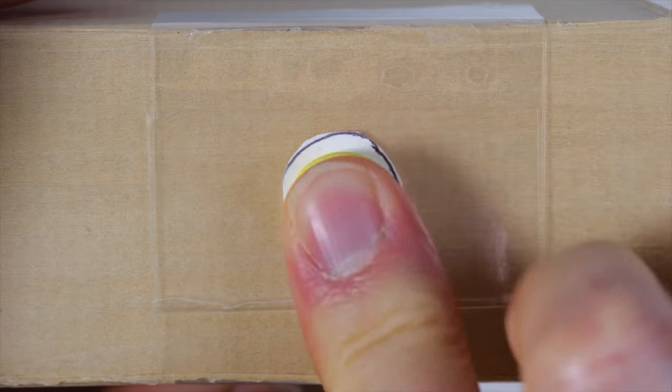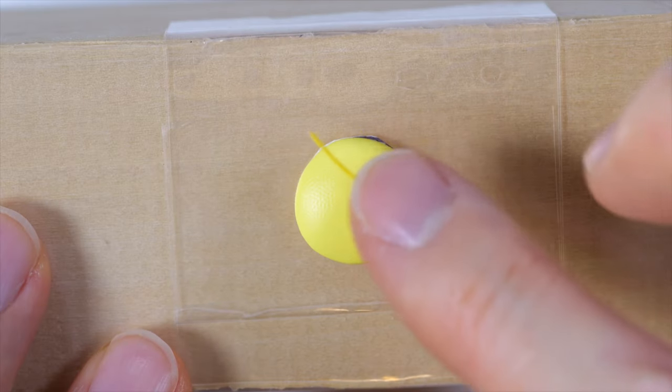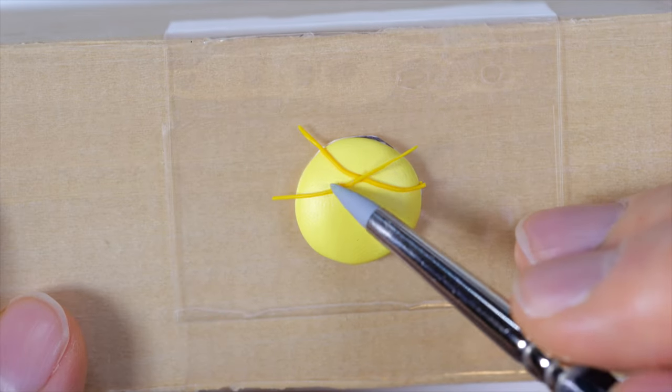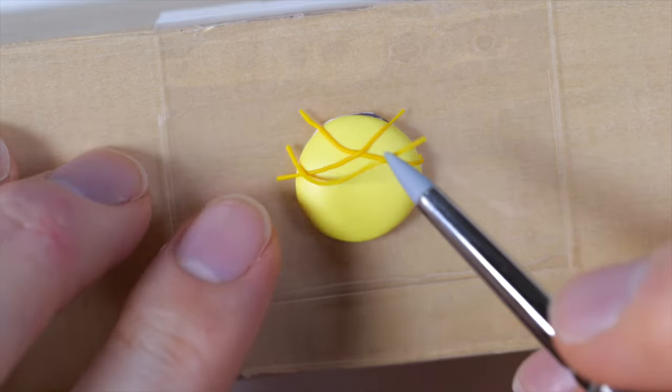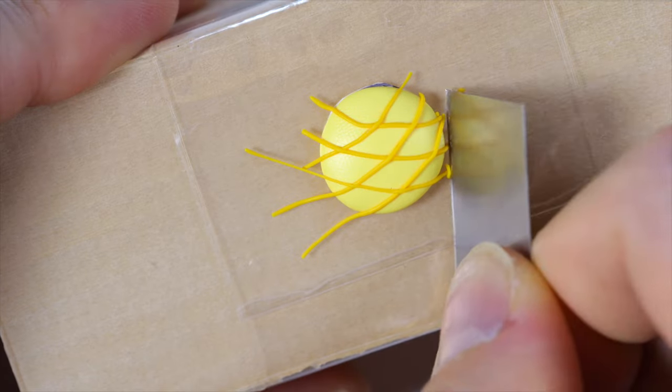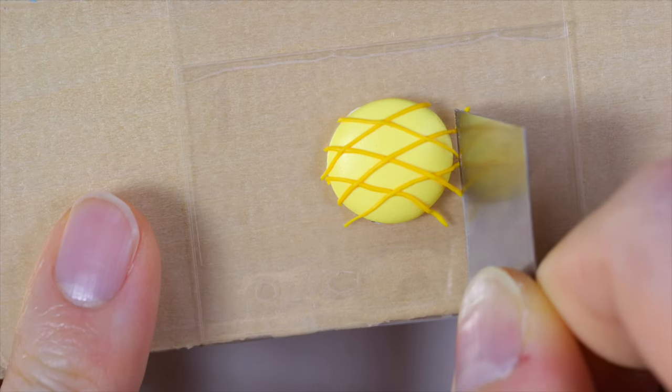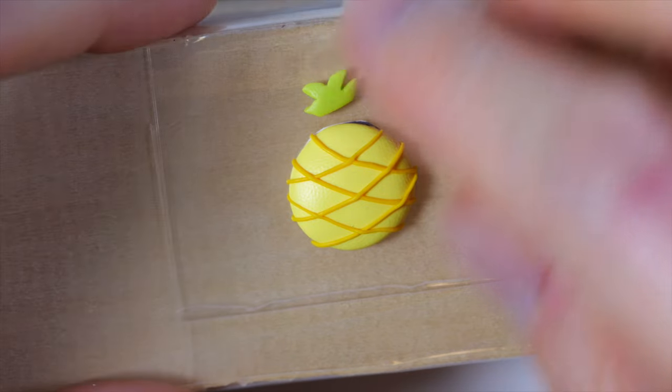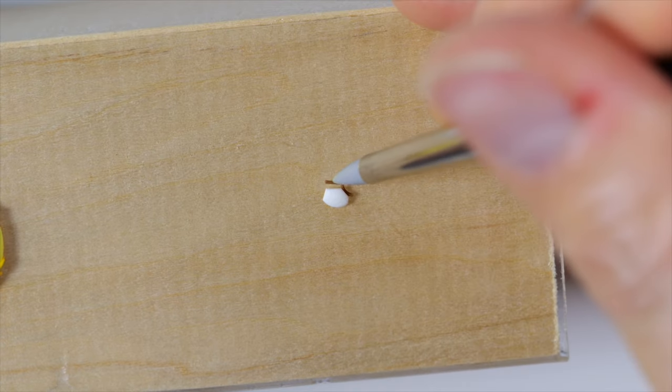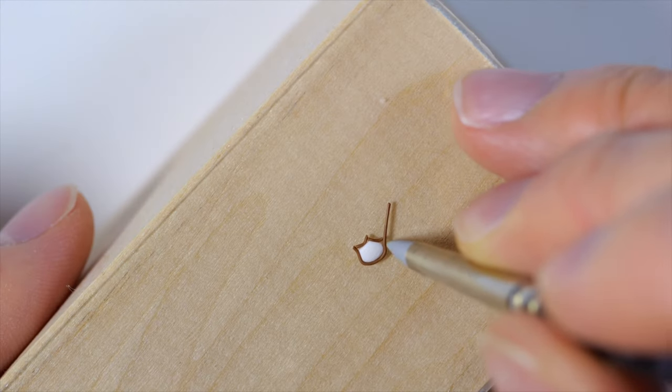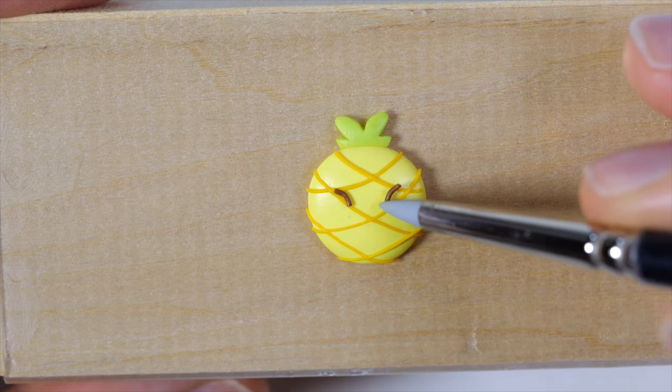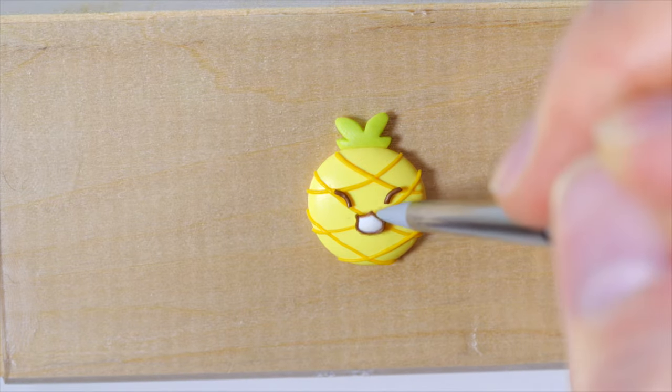Next we're going to make the pineapple. So I'm going to take some yellow clay and flatten it out. Then with the darker yellow clay, we're going to roll it out to thin snakes and make the little pineapple design. And cut off the excess. I added a little green pineapple leaf thing on top. And for the mouth, we're going to take a pentagon shape and wrap it around with brown clay. And we're going to give it some line eyes. And then it's happy mouth.